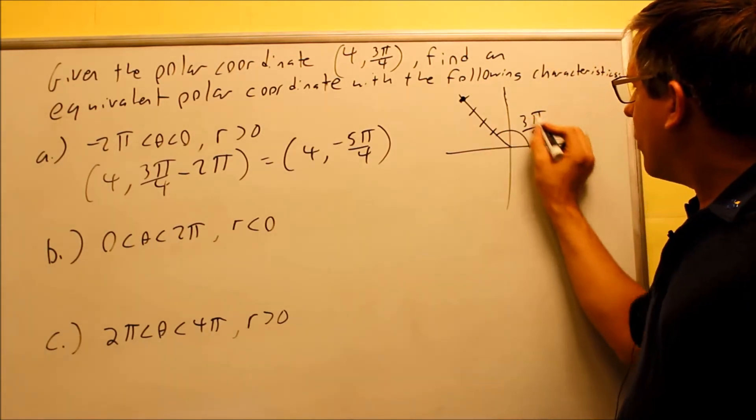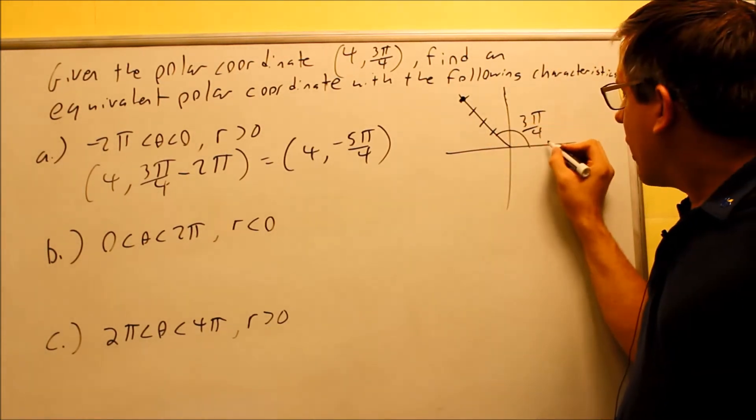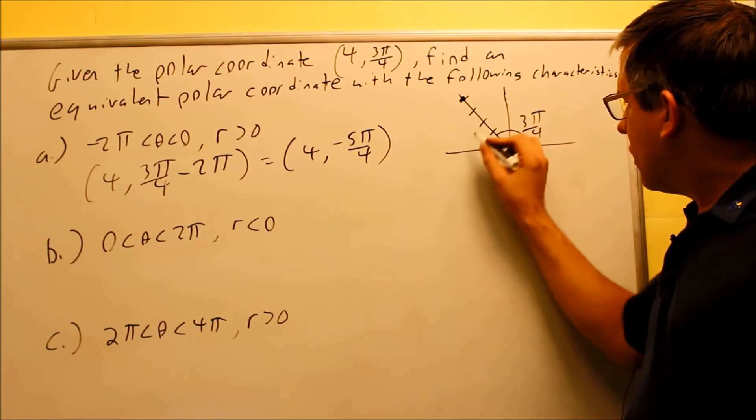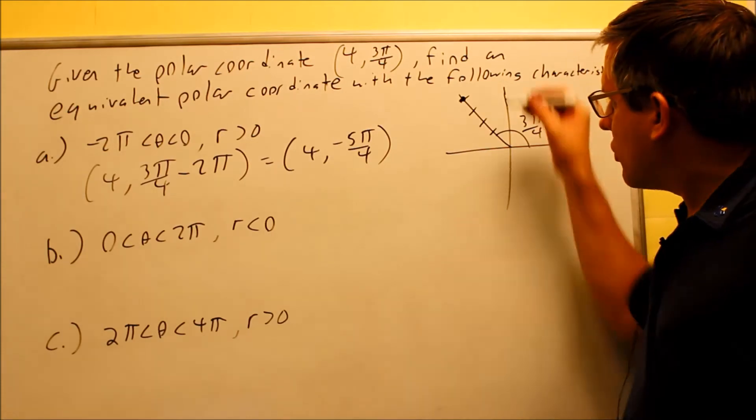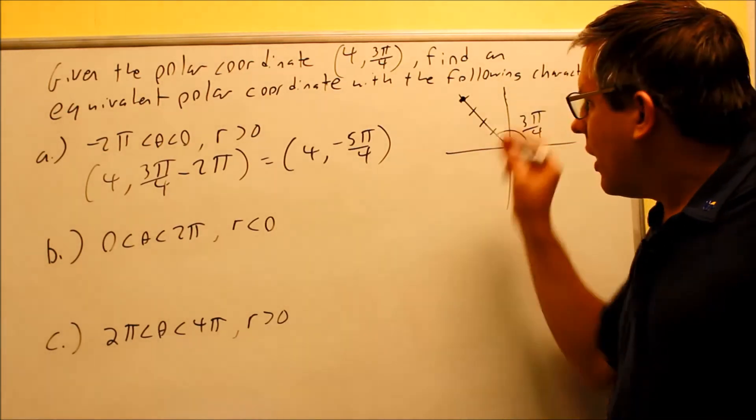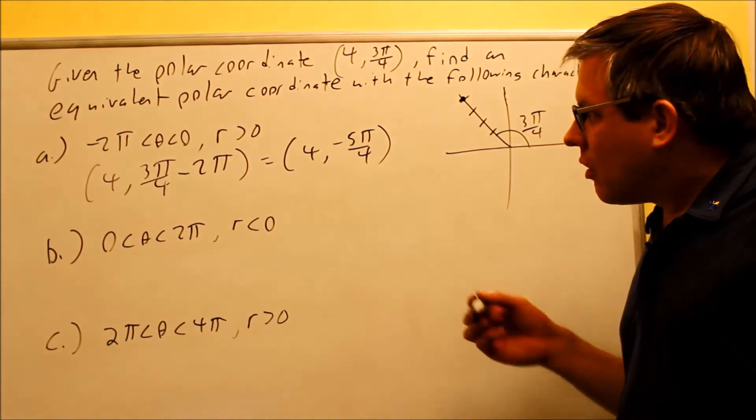I can either go around this way, 3π/4 to here, or I can go around the negative version this way, clockwise, which is a negative angle. That would be negative 5π/4. So yes, we still will arrive at the same spot as the original point. Let's look at the next one.